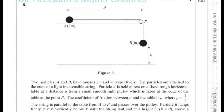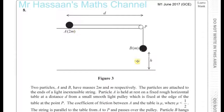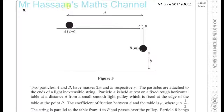Two particles A and B have masses 2m and m respectively. The particles are attached to the ends of a light, inextensible string. Particle A is held at rest on a fixed, rough, horizontal table at distance d from a small, smooth, light pulley which is fixed at the edge of the table at point P. The coefficient of friction between the table and A is mu.